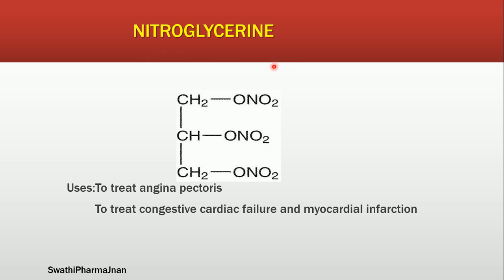Next structure is nitroglycerin. First we will see the structure of glycerin: CH2OH, CHOH, CH2OH. In the place of the 3 hydrogens at the 1st, 2nd, and 3rd position, we introduce nitro groups. That is the structure of nitroglycerin. It is used to treat angina pectoris, and also to treat congestive cardiac failure and myocardial infarction, which are also coronary heart diseases.